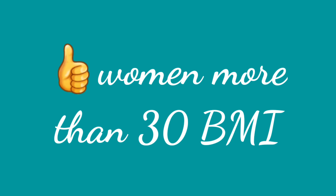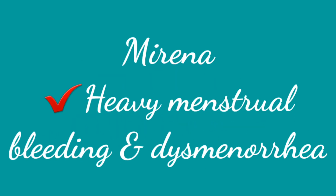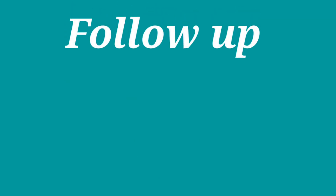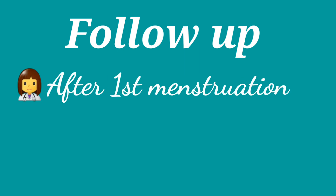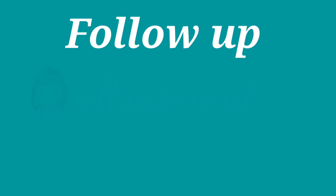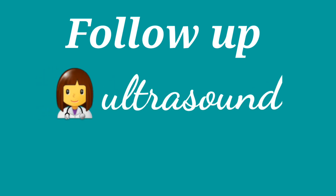The levonorgestrel intrauterine system is effective for patients with heavy menstrual bleeding and dysmenorrhea associated with endometriosis. Correct placement of an IUD during the postpartum period — whether immediate, delayed, or intra-cesarean — is a safe and effective contraceptive method. Follow-up is recommended after the first menstruation or three to six weeks after insertion. Transvaginal ultrasound is not recommended unless there is no visualization of the string on inspection or there is suspicion of displacement.